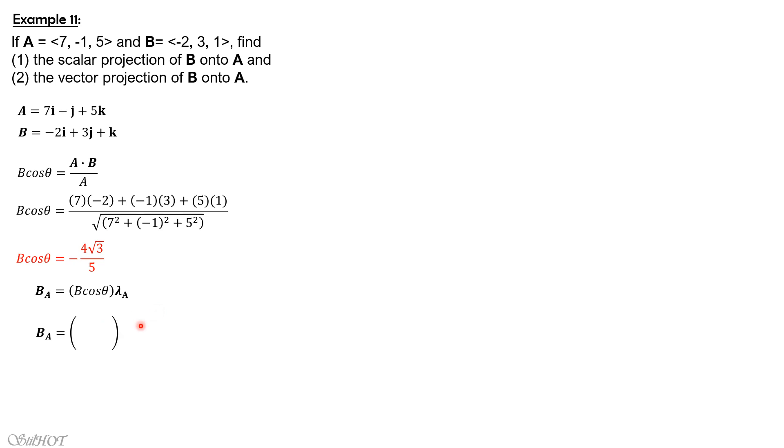So substituting, -4 square root of 3 over 5 times (7i - j + 5k) divided by 5 square root of 3. So simplifying this, you will have b sub a equals -28/25 i plus 4/25 j minus 4/5 k. So that's it.